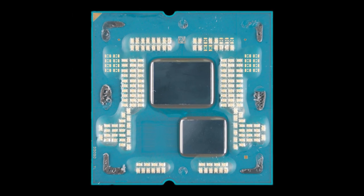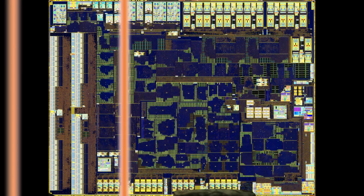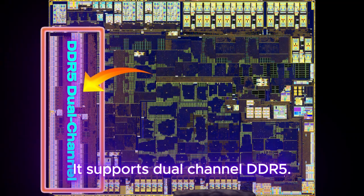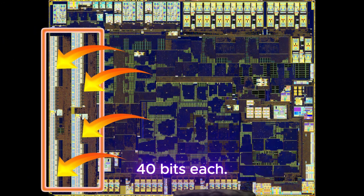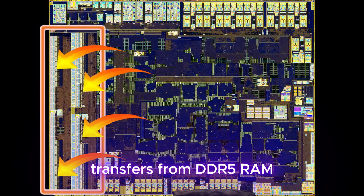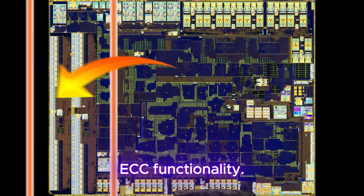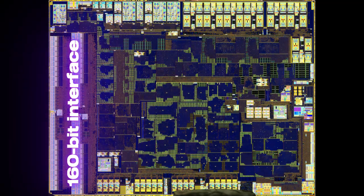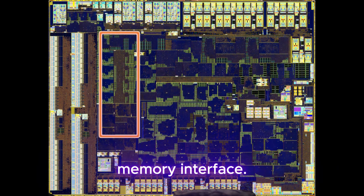Moving on, we're going to take a look at a die shot of the IO die. It's very dense and packed with different sections. The memory interface is located to the left; it supports dual-channel DDR5, made up of four clusters with 40 bits each — 32 bits for transfers from DDR5 RAM and 8 bits for ECC functionality. In total, the IO die uses a 160-bit memory interface, with memory controllers located beside it.